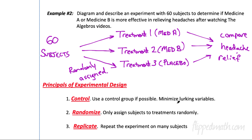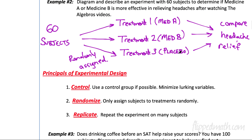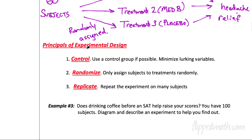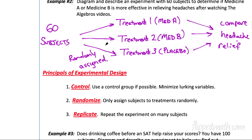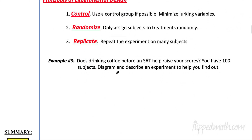There are three principles of experimental design. First: control — you want a control group so you can compare treatments to the placebo, which minimizes lurking variables. Second: randomize — you must randomly assign subjects to treatments. Third: replicate — notice we don't have just three or six people; there are 60. We replicate this 20 times per treatment so we can find an average and compare. There's actually a fourth principle you get to in AP Stats, but for now these three are the main ones.